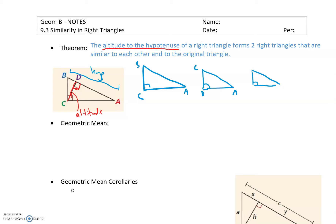And that smallest right triangle in the left corner — the right angle is once again at D, the longer side goes from D to C, and then up to B as the shorter side. Order really does matter because you want to write the corresponding letters in the same position. So the big similarity statement is: triangle ABC is similar to triangle ACD, which is similar to triangle CBD.